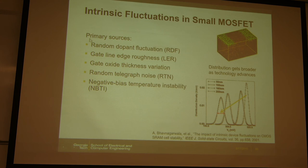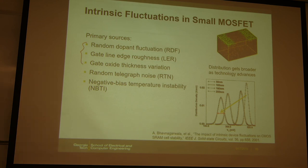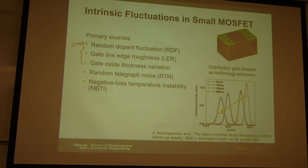To summarize, the sources of fluctuation or variation in small-scale MOSFETs are: (1) Random Dopant Fluctuation (RDF), (2) Line Edge Roughness (LER), and (3) Gate Oxide Thickness Variation. These three are static effects — the VTH variation will not change over time, but accounts for spatial variation, meaning Device A and Device B will have different threshold voltages due to these reasons.